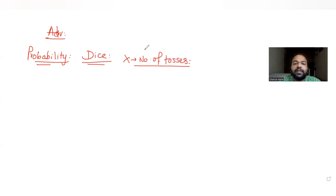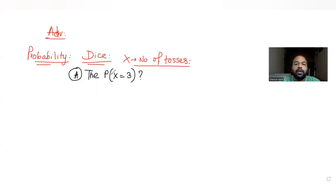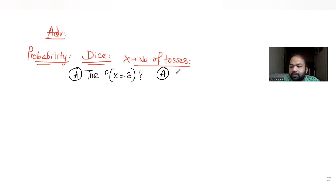There are three parts to this question. The first question asks us to find the probability that X is equal to 3 — that is, the probability that 3 tosses are required to obtain a 6 on the die.